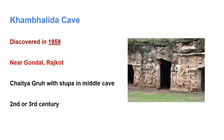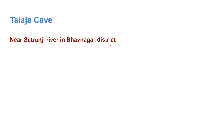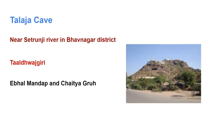The next one is Talaja cave. The mountain of Talaja is situated near the mouth of the Setronji river in Bhavanagar district. It is famous as the Pilgrim of Taldhavaj Giri. 30 caves have been carved from stones with huge gates. Ibal Mandak and Chaitya Guru are the best examples from a sculpture and protection point of view. Cave architecture of Buddhist religion belongs to the 3rd century. Out of 30 caves, 15 are water tanks.